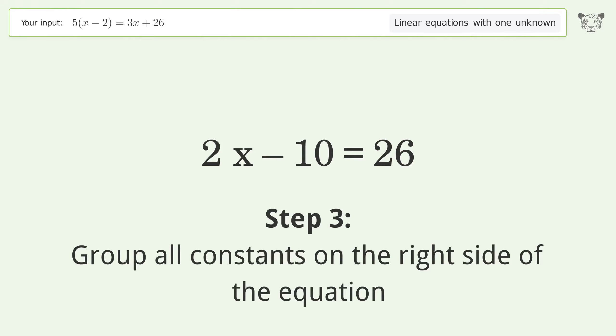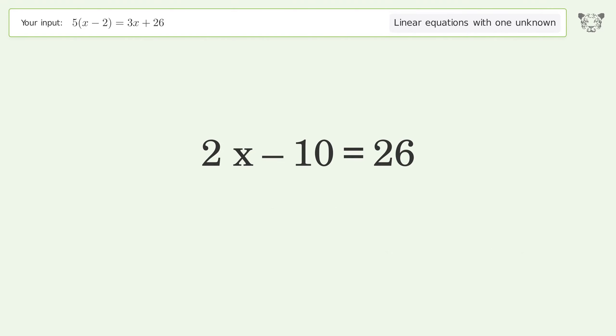Group all constants on the right side of the equation. Add 10 to both sides. Simplify the arithmetic.